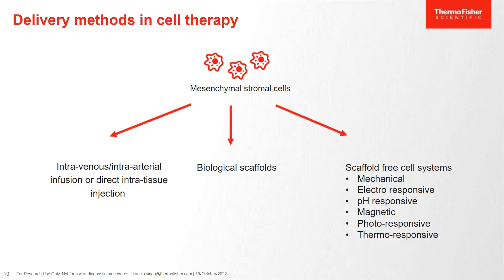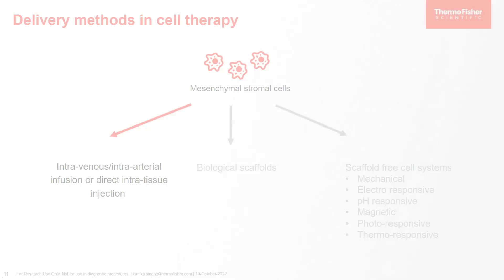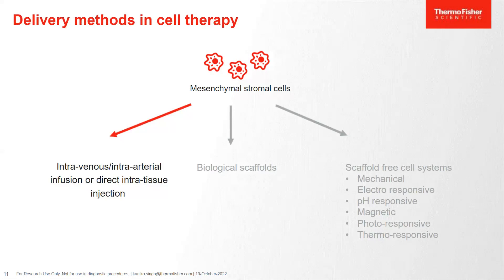There are many delivery methods available for MSC therapy. The first and simplest and most inexpensive method is to treat patients by injecting isolated MSCs. The second one is using biological scaffolds, which includes the transplantation of cells to the disease site using biodegradable materials. And the final approach is scaffold-free systems. The presence of serum and ECM in culture has potential risks associated with it, and it is important to culture MSCs in a risk-free environment if we want to translate them for cell therapy research.